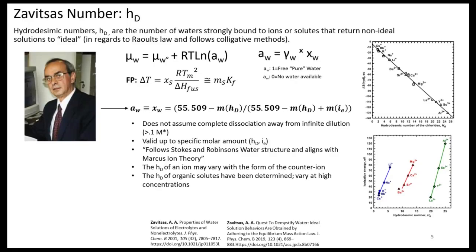The colligative approach was somewhat inspired by — and more or less provided more evidence to — the work done by Andreas Savitsas, a senior professor of chemistry and biochemistry at Long Island University, Brooklyn. Savitsas produced a simple activity model of water using what he calls the hydrodicemic number, or the number of water molecules strongly bound to an ion or solute in solution that return a non-ideal solution to ideal. This regards Raoult's law and follows colligative methods such as freezing point depression. The activity of water is a very important quantity for food science — it's one of the reasons why you don't have bacteria growing in jellies or jams.